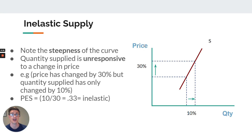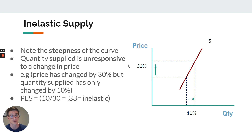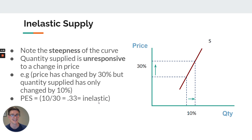We didn't do this when I introduced elasticity in a previous video, so I just wanted to quickly show you that the definitions for looking at an inelastic supply curve and an elastic supply curve are exactly the same for looking at an inelastic or elastic demand curve. So we've still got the steepness of the curve, we've still got an unresponsive quantity supplied that is unresponsive to a change in price. We've even got the same numbers, which leads to the same PES as we did for the PED — 0.33, below one, which means it's inelastic.